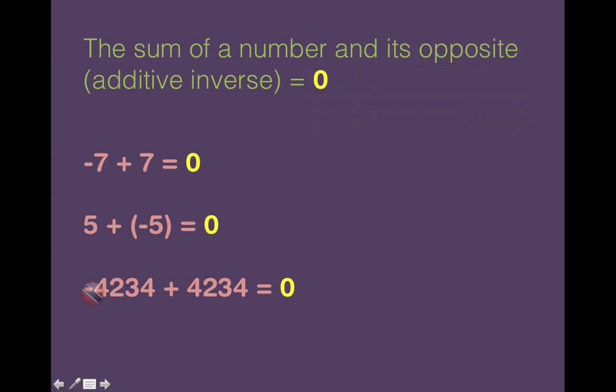So for instance, in this example, the final one, we have negative 4234 plus positive 4234. So that is a number and its opposite, and when you add its opposite you're going to get 0 once again. So that's the beauty of it: the sum of a number and its opposite will always equal 0.